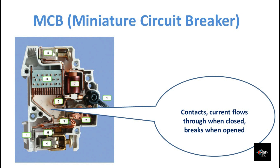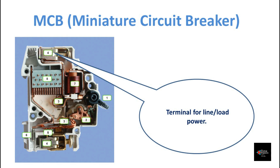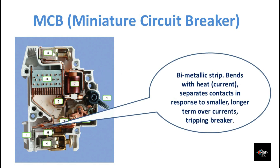The contacts allow current to flow through when closed, and break the current when separated. There are two terminals — one incoming and one outgoing — for line and load power. When the MCB is switched on, current flows through the input terminal, to the bimetallic strip, through the magnetic tripping coil, and to the output terminal.